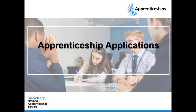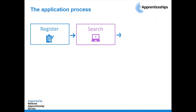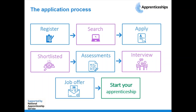First things first, this is what the application process typically looks like for an apprenticeship. First of all, you need to be searching for your vacancies. Once you've found your vacancy, you then apply. Hopefully after you've applied, you are going to go through some shortlisting. There's a step before you get to interview stage normally, and that is a stage of assessments.